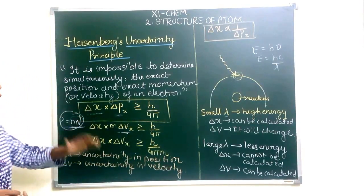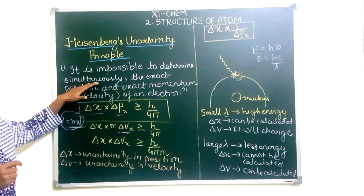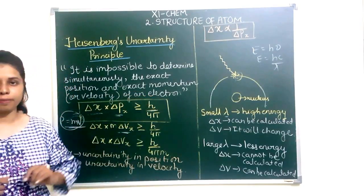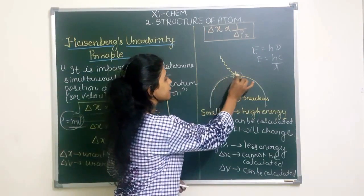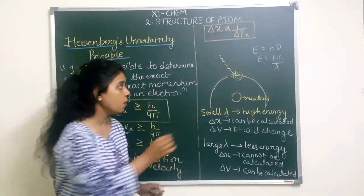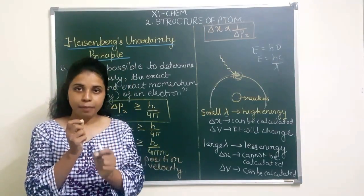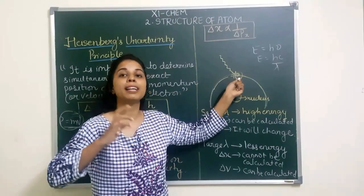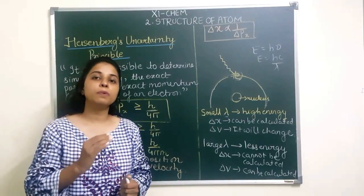Let's see the statement. According to Heisenberg's uncertainty principle, it is impossible to determine simultaneously the position as well as the momentum of an electron. Consider this is your nucleus and this is the orbit on which an electron is moving. If the electron has reached a certain position and I want to calculate its exact position, I can determine that, but simultaneously I cannot determine its velocity. That means if an electron is moving in a particular orbit, you cannot determine its position and velocity simultaneously.